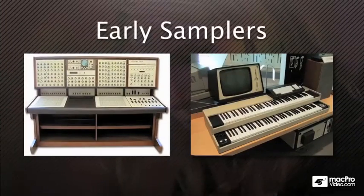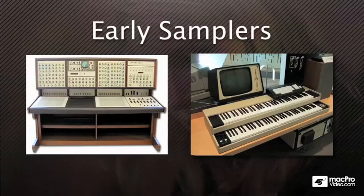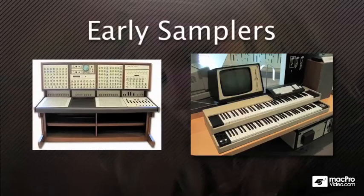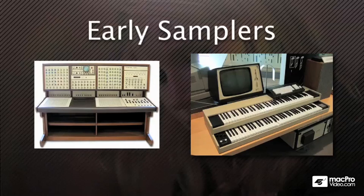Here we have some pictures of the first samplers. The first digital sampler was the EMS system, and the first polyphonic digital sampling synthesizer was the Fairlight computer music instrument. You can see that these look pretty old, but they were very powerful and incredible samplers. At the time, 28 megabytes of memory seemed like a whole lot, but compared to what we have now, it really doesn't seem like very much.